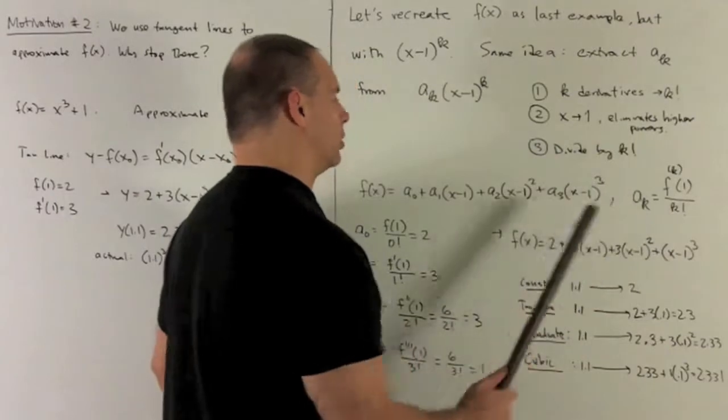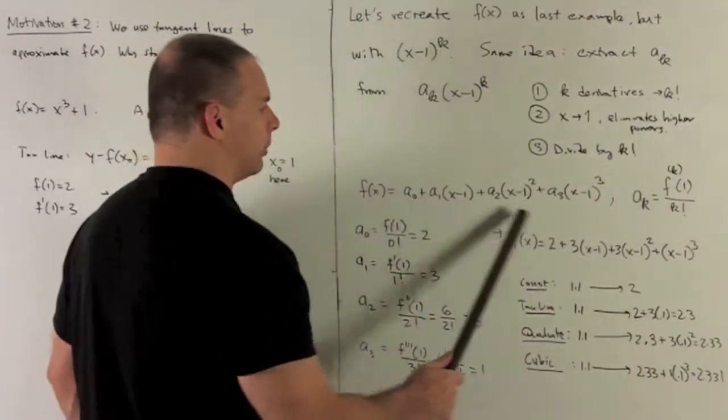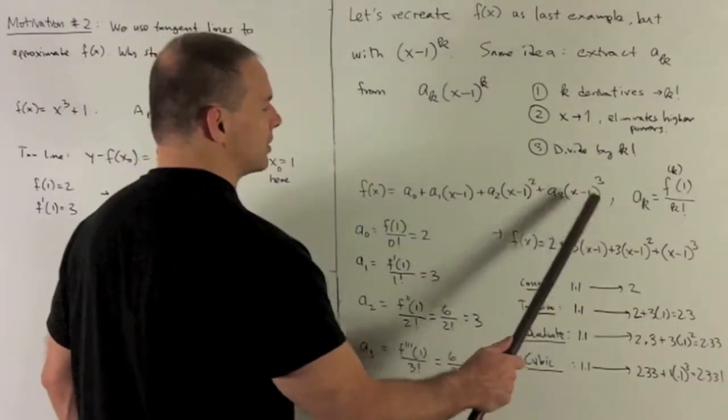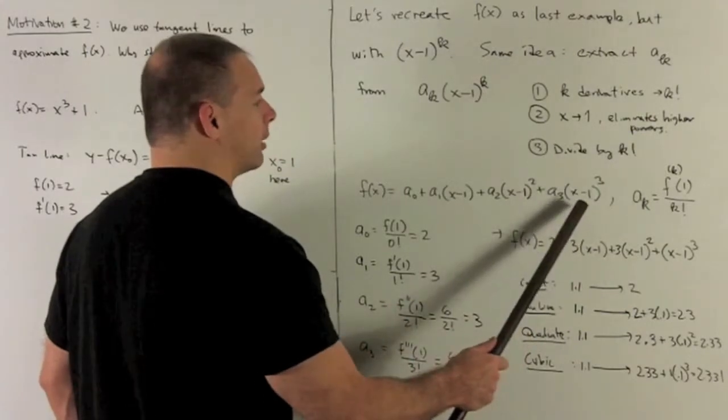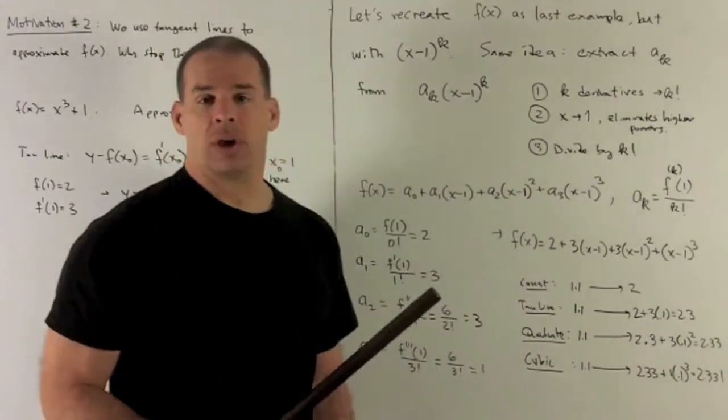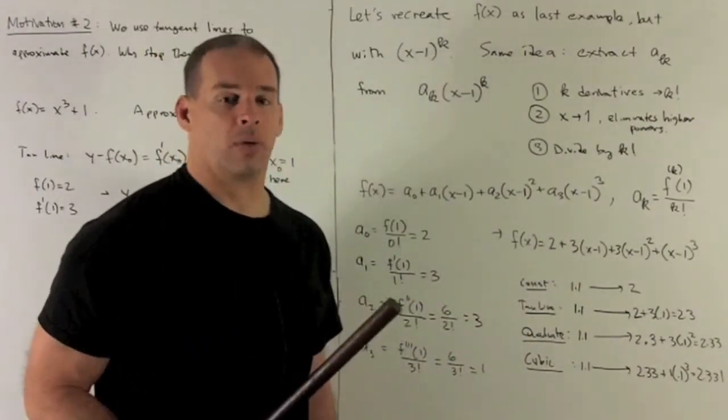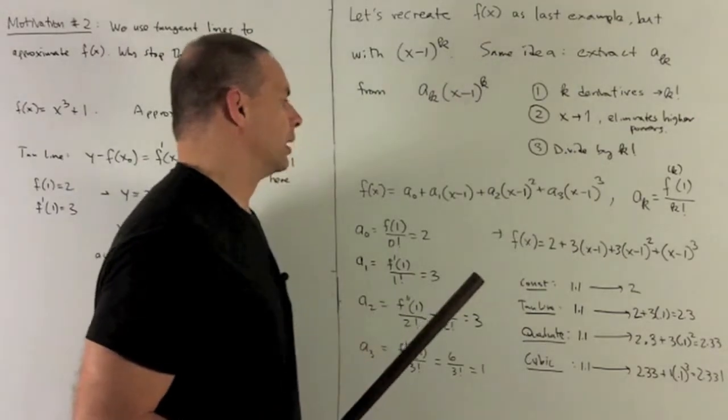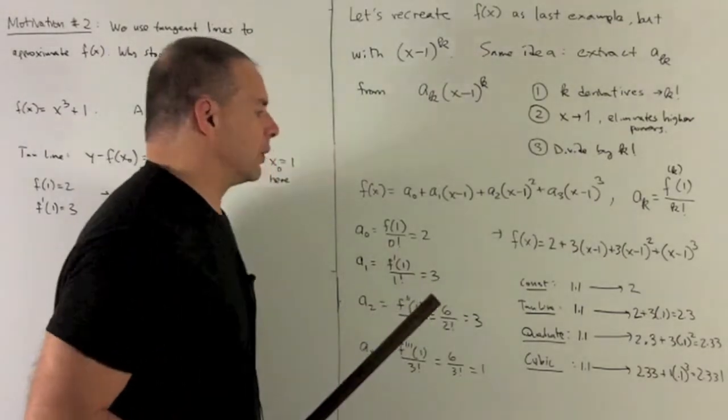Once I have all of these, we're going to load them up into a polynomial that looks like this. In this case, we're going to need a cubic because we only have a third power on our original function.